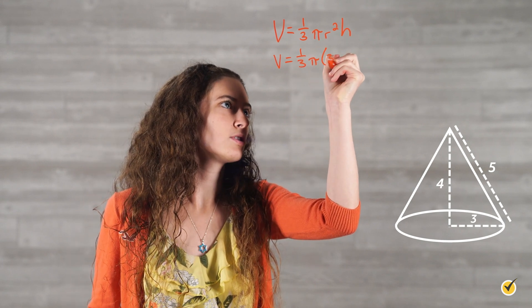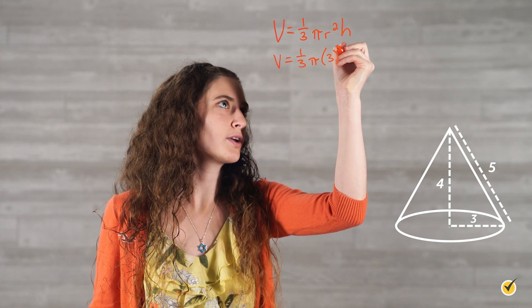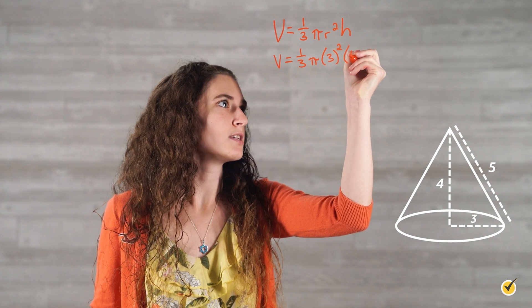We know that our radius is equal to 3, so we're going to substitute 3 in for r, and our height is equal to 4.